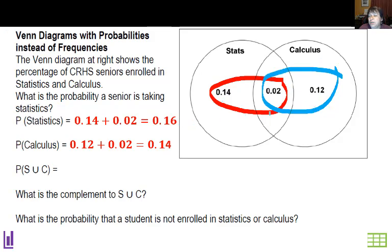The probability of stats or calculus, so I would only count each of these numbers once. Or if I did this probability, I could use the formula. So I could just add them up once, 0.14 plus 0.02 plus 0.12. Guess what I get? 0.28. Now if I did that formula, probability of A plus probability of B minus the overlap, the AND, that also works, it gives me 0.28.